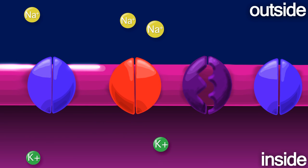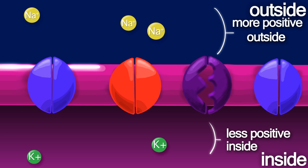A resting neuron's plasma membrane is polarized. When a neuron is polarized, there are fewer positive ions inside the cell than outside the cell. In other words, the inside of the cell is less positive than the outside.